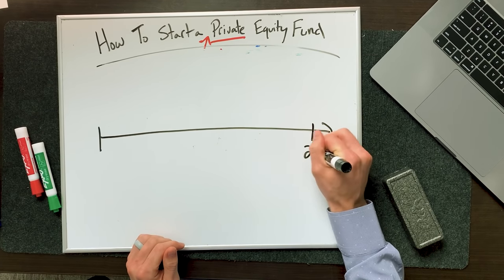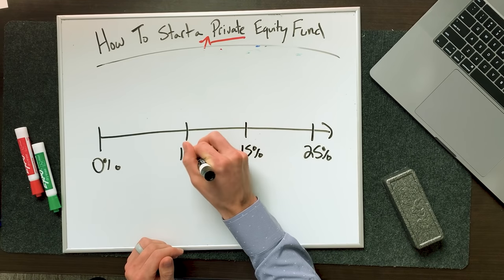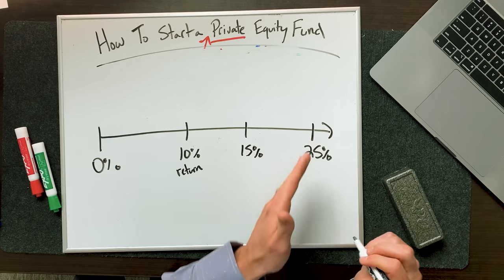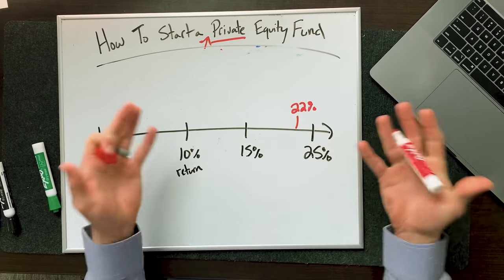Now let's run through how private equity managers make so much money — how everyone is paid when the assets or businesses make money. I'm going to draw a timeline here from zero to about 25%. We'll put 10 here, 15 here, and call this just 'return.' We can use IRR, yield, APY — I'm just going to make it simple and call this a return. So we've got a 10%, 15%, 25%, or 0% return. For this example, let's say your fund got a 22% return this year. You guys did pretty good and you now need to decide how that's going to be split up to investors.